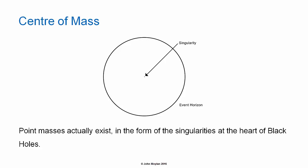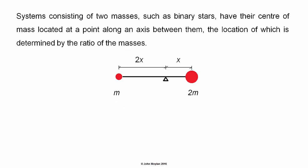The event horizon at the edge of the black hole is the distance from the singularity at which light is no longer traveling fast enough to escape the gravitational pull of the singularity. Systems made up of two masses, such as binary stars, have their center of mass located at a point along an axis between the two masses. The location of the center of mass along this axis is determined by the ratio of the masses.